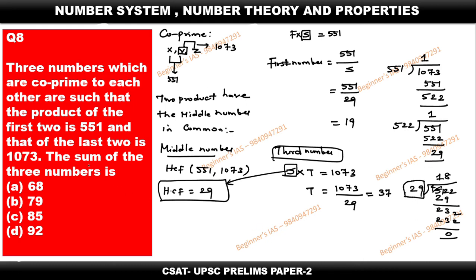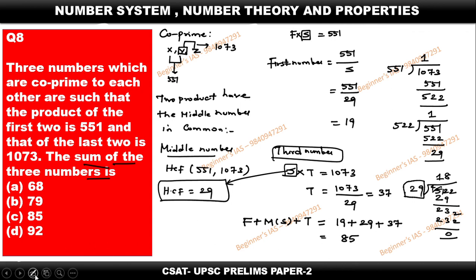The question asks for the sum of the three numbers. First number + second number + third number = 19 + 29 + 37 = 85. Therefore, the answer for this question is option C, 85. Thank you all, have a good day. If you have any doubts, please clarify and I will help you.